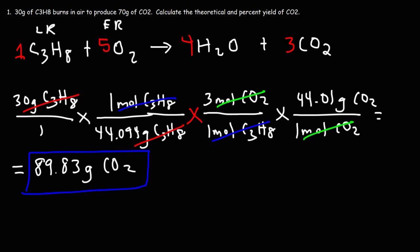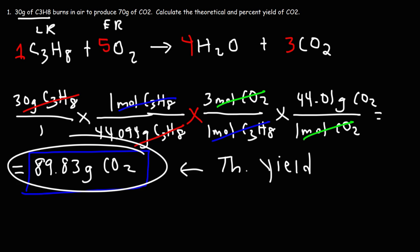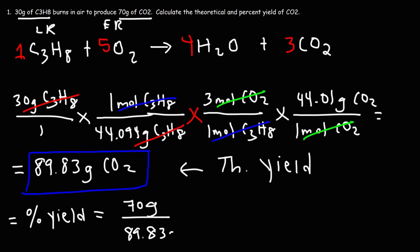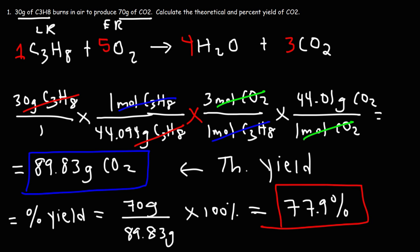89.83 grams of carbon dioxide is the theoretical yield — the maximum amount of CO2 that can be produced by burning 30 grams of propane. Now we calculate the percent yield: 70 (actual yield) divided by 89.83 (theoretical yield) times 100%, giving a percent yield of 77.9%. That is the answer to the problem.